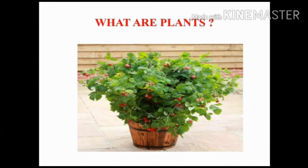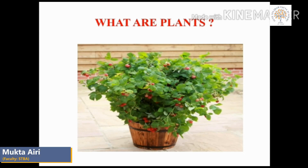What are plants? Plants are living things. Plants are made up of cells. They need air, water, soil, and sunlight to live. They cannot move from one place to another, but their leaves move to catch the sun and their roots move to get water. Their seeds can be carried by animals or blown by the wind.